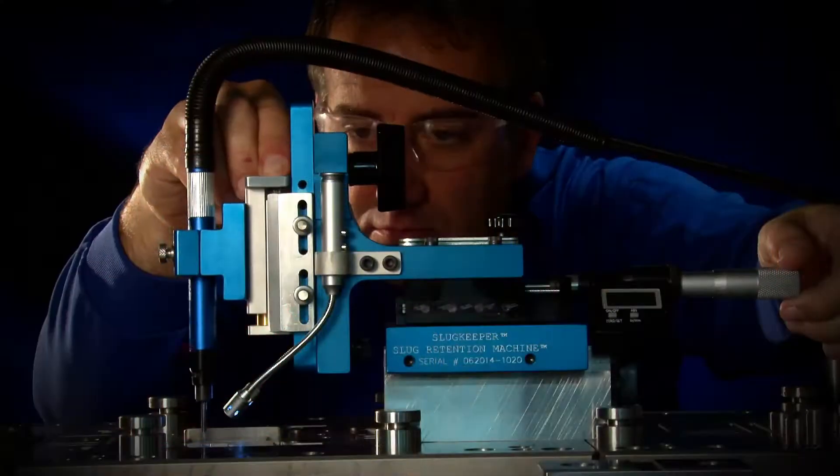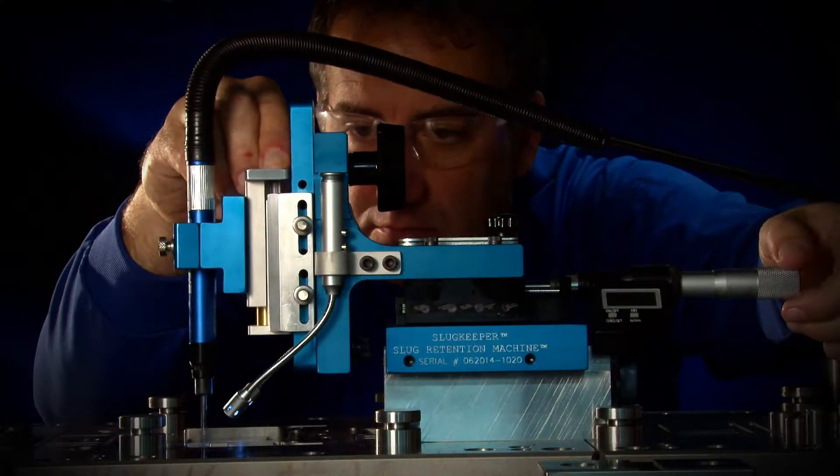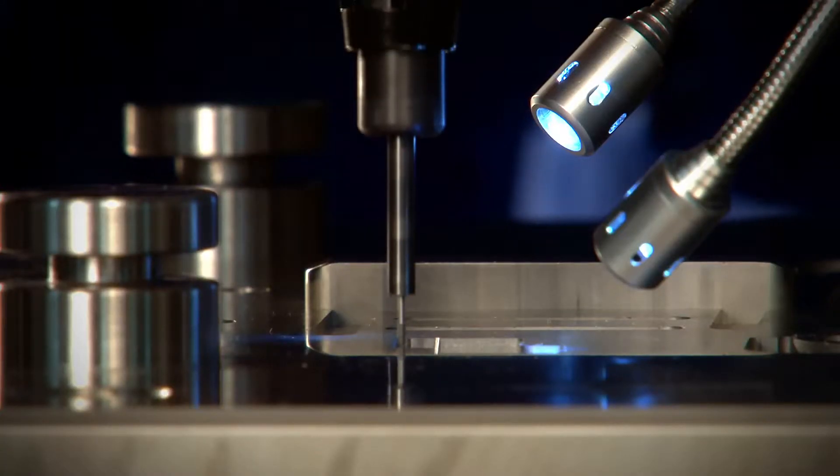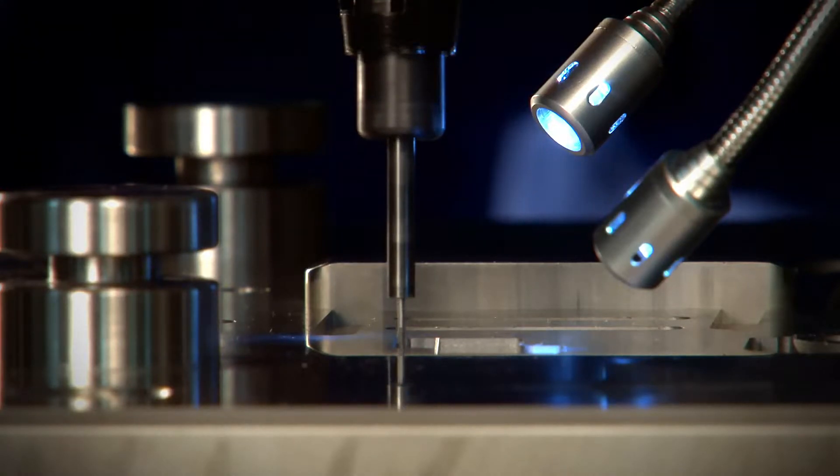The retention grooves can be machined into the die openings while the die is still in the press, resulting in even greater savings by eliminating the need to remove the die from the press, disassemble it and return it back to the press.